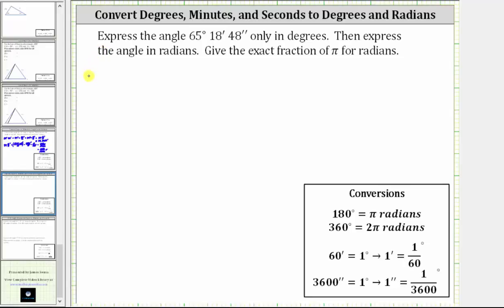So we are given the angle as 65 degrees, 18 minutes, 48 seconds. The first step is to convert 18 minutes and 48 seconds to degrees. 60 minutes is equal to one degree, and therefore one minute is equal to 1/60th of a degree. And because we have 18 minutes, we can express 18 minutes as 18/60ths of a degree. So let's write this as 65 degrees plus 18/60ths of a degree.